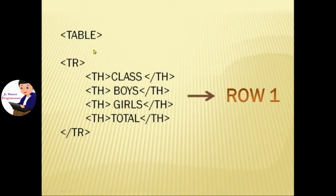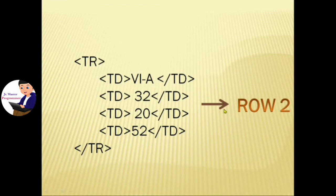Start from the table tag, then add a tr tag. Within the tr tag we use the th tag for table headings, since it is the first row. For the second row we use td tags within the tr tag — td means normal text.